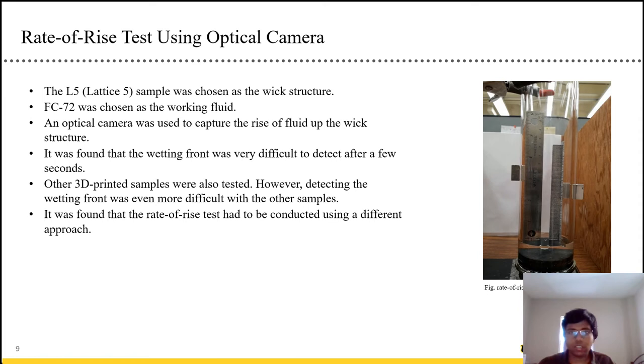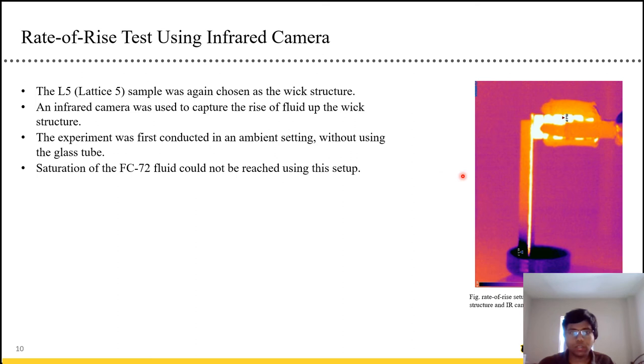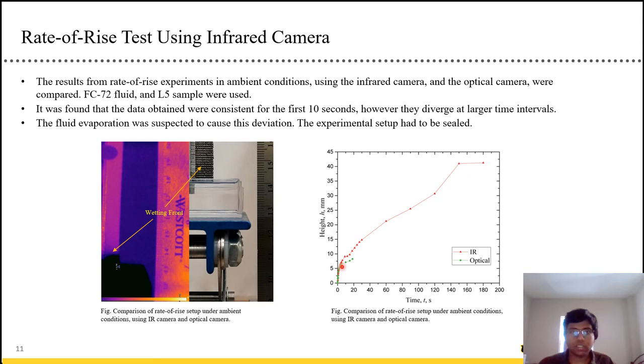Even that one proved to be difficult to work with in terms of an optical camera. So then we switched to an IR camera. And we were able to see something for the wetting front. If you see here, you had this dark area which we assume corresponds to the wetting front. But this is in an ambient setting, so there is no glass tube, and we don't have saturation. This is a comparison between the optical and the IR, both in ambient condition. As you can see, they diverge at around 10 seconds. And we believe that's because it's not saturated and there's a good amount of evaporation happening.